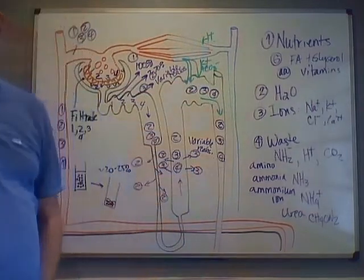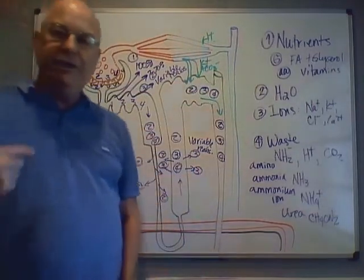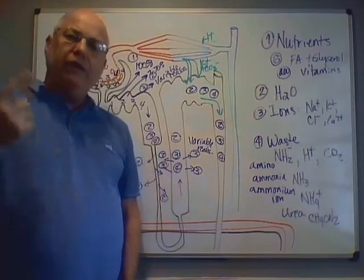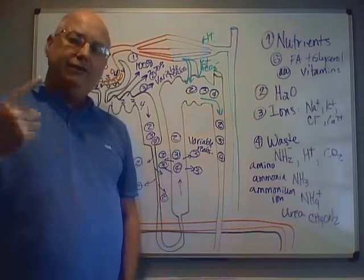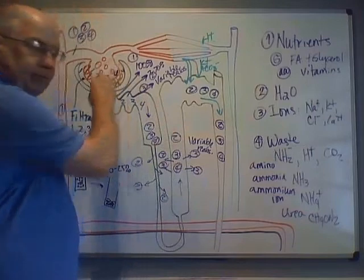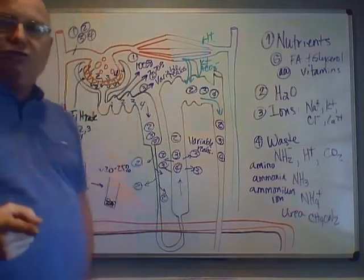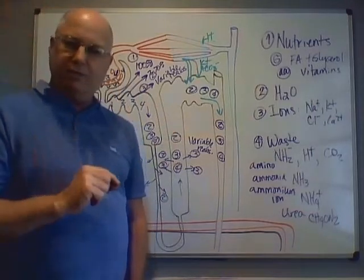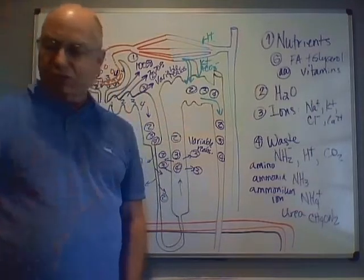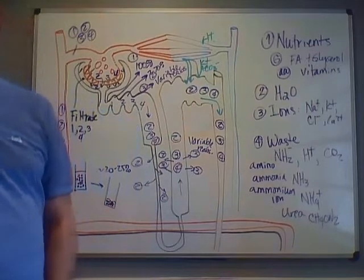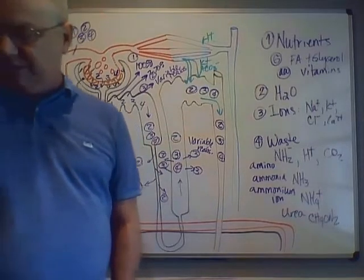If you do have blood in your urine, that's called hematuria — not a good sign; it means there's a problem with the filtration membrane. You should also not have plasma proteins in your urine; trace amounts may occur, but it is generally abnormal.